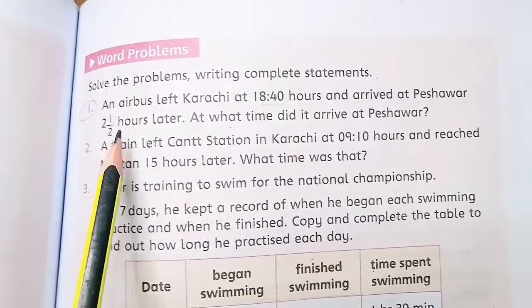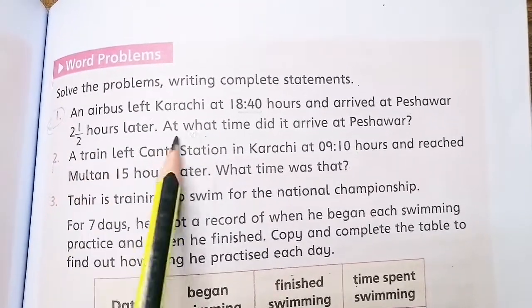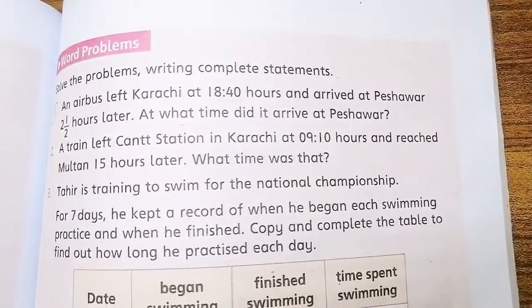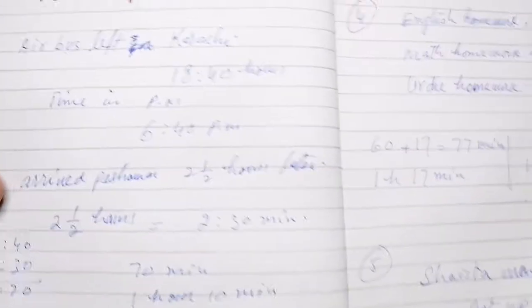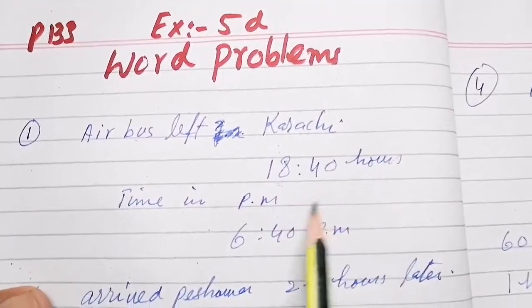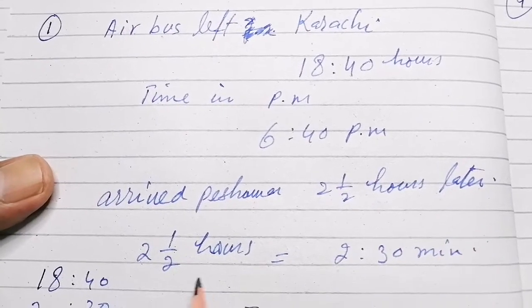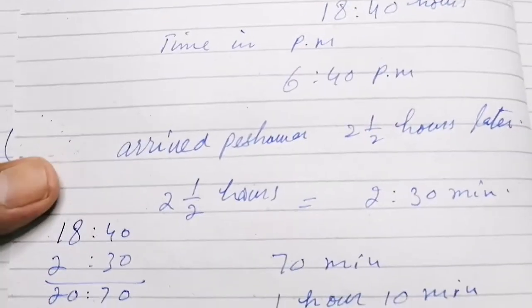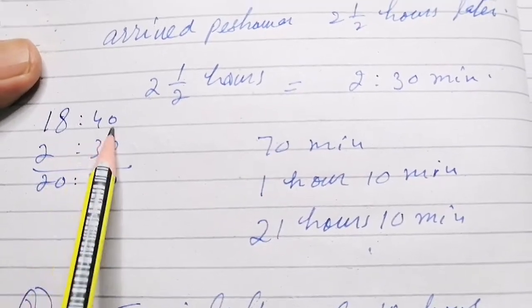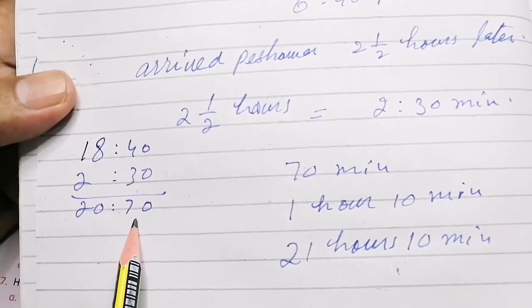The plane is late by 2.5 hours, so at what time did it arrive at Peshawar? We can see that 1840 hours is 6:40 pm, and 2.5 hours later means we add 2 hours 30 minutes. So 1840 plus 2 hours 30 minutes gives us 20:70.